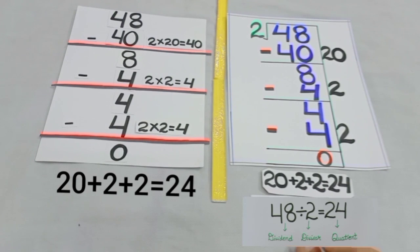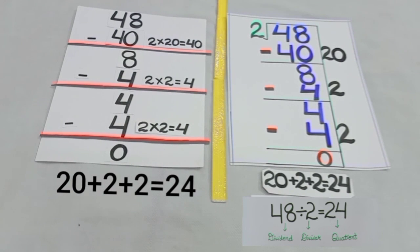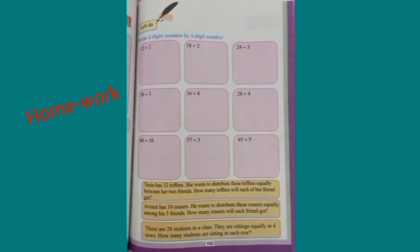From here we get: when 48 is divided by 2, the result is 24. Where 48 is the dividend, 2 is the divisor, and 24 is the quotient. For homework, dear students, solve the sums given at page number 115 of your maths book. Thank you.